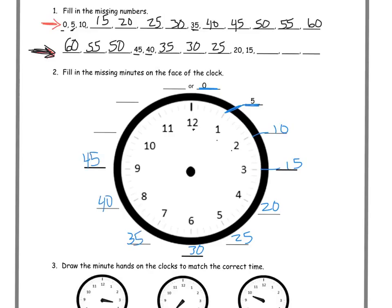And these are the minutes that you're going to write when you write your time. And notice we're going to get to 60, and that's the same as 0, because at 60 minutes, that's the next hour.